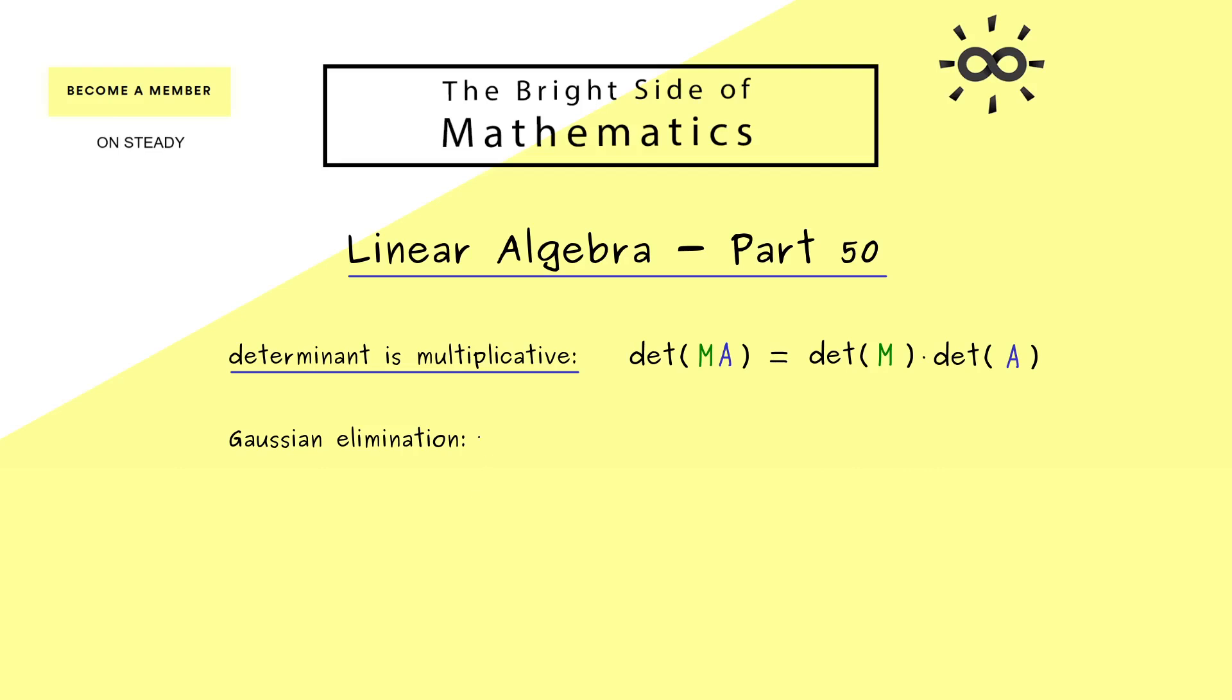Now on the other hand we know that the Gaussian elimination is given by row operations for a matrix. It means that you start with a matrix A then you do row operations and you get a new matrix out. And now the thing is that these row operations can be described by a multiplication of a matrix M from the left. In other words we just have to know how the matrix M looks like for different row operations.